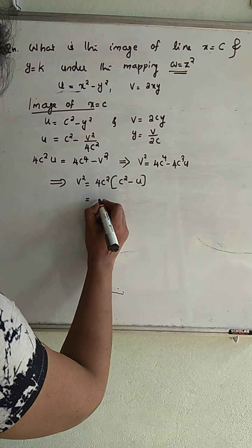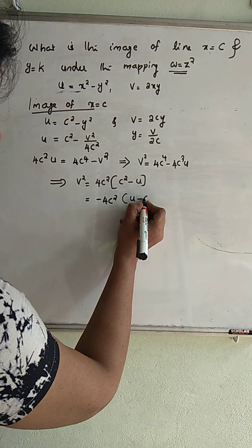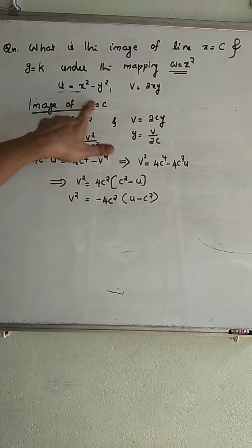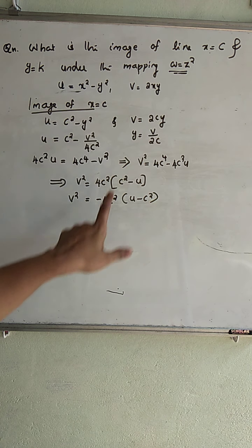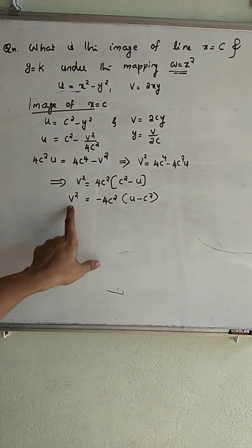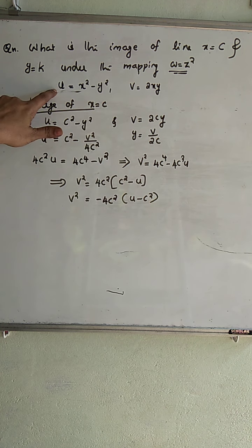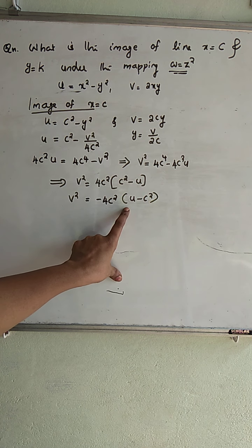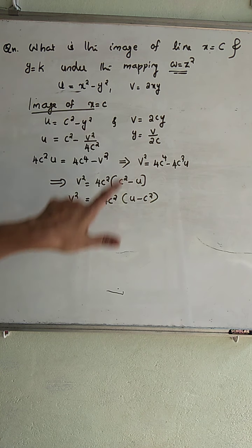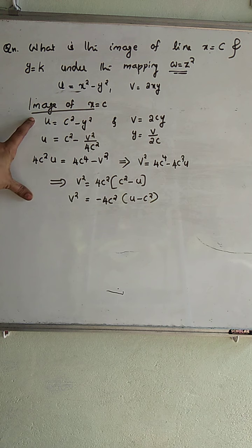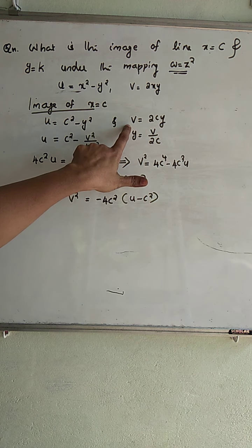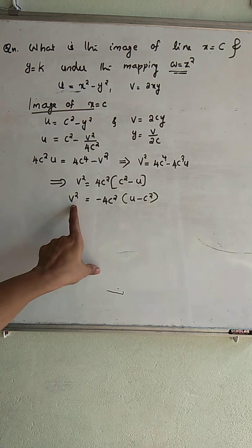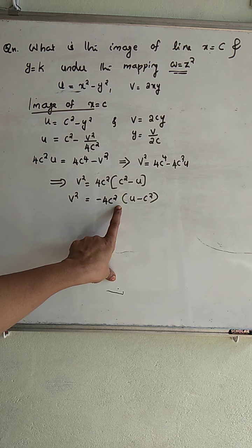Rearranging, we take V square to the left-hand side and bring 4C square U to the right-hand side, factoring out minus 4C square to get minus 4C square into U minus C square. So by substituting X equal to C, we have eliminated X and Y and obtained an equation in U and V only, which represents the image in the W plane.